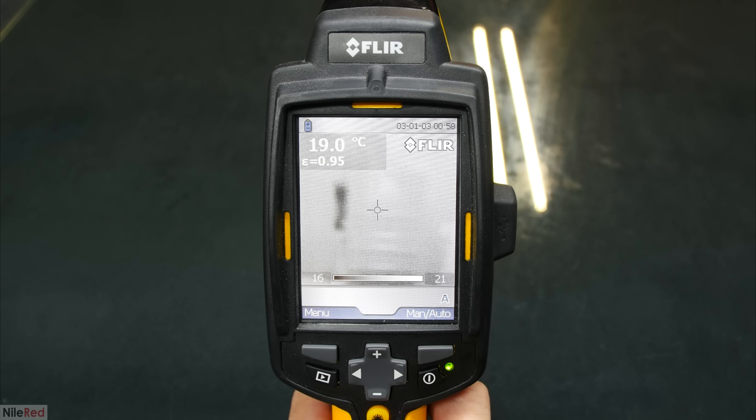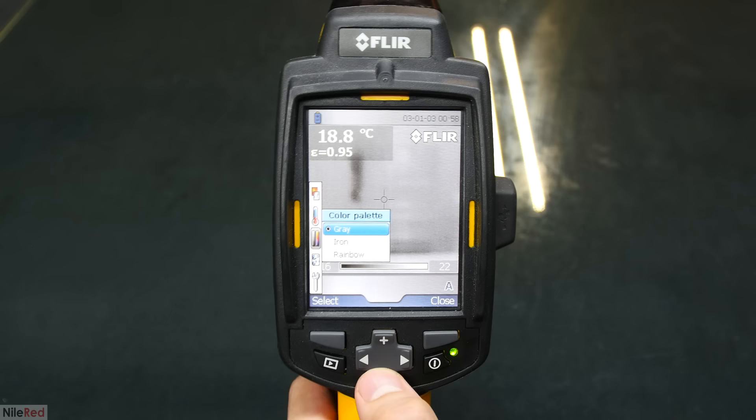The numbers tell us the temperature range that we're visualizing, and the bar tells us how the temperature is being represented. We can select from different color palettes, but right now we're in gray mode, so colder stuff is darker, and hotter stuff is brighter. When I put my hand in front of the camera, you can see it's much brighter than the background.